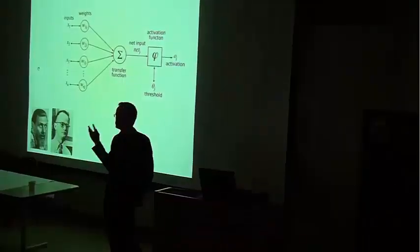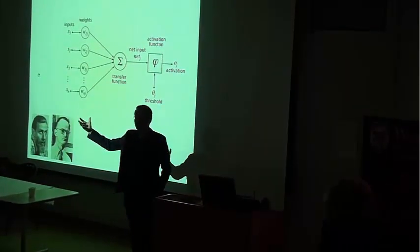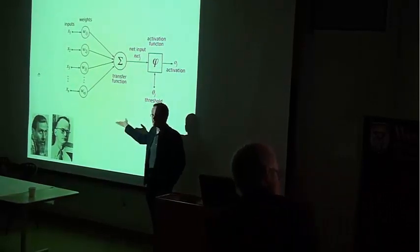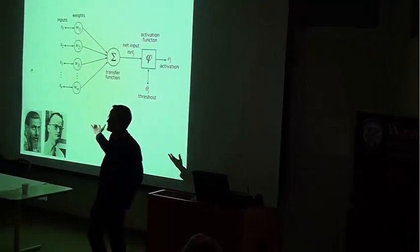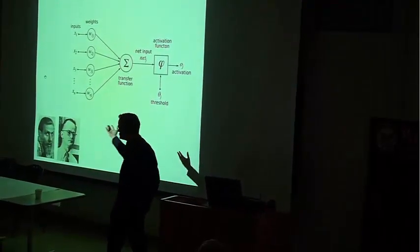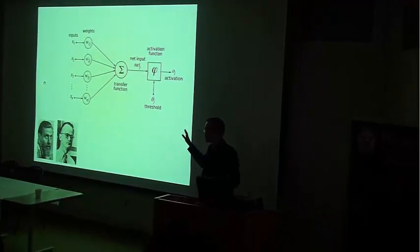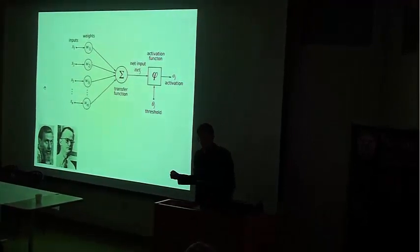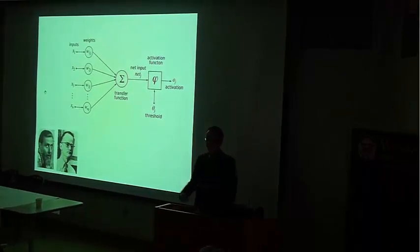described something called a perceptron, which was their very simple mathematical model of how a neuron works. There's some inputs. You sum all the inputs together, and if they're above some threshold, then the neuron fires. This is based on classic electrophysiology and our understanding of the biology of a neuron. People got really excited about this in the late 50s and early 60s, and were talking about walking, talking robots and neural nets that mimic the brain.